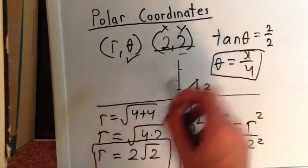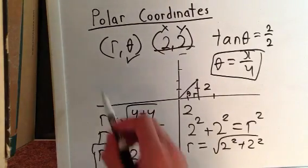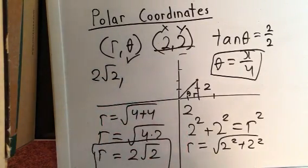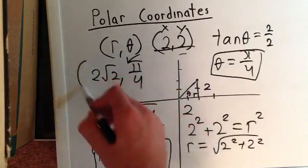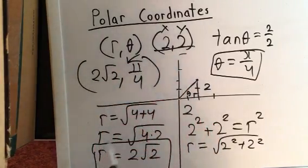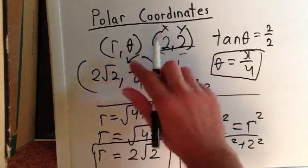So the point (2, 2) in polar form will be written as (2√2, π/4). And so that's how it's done.